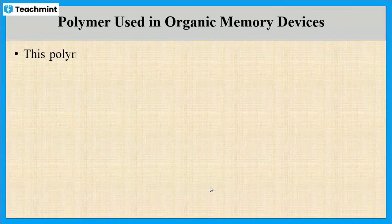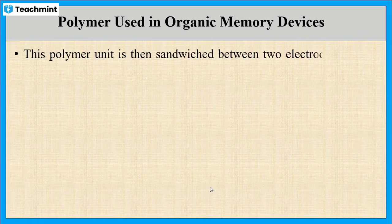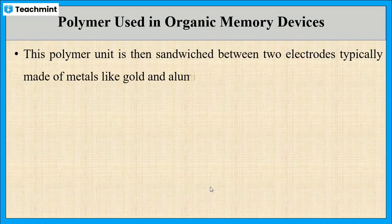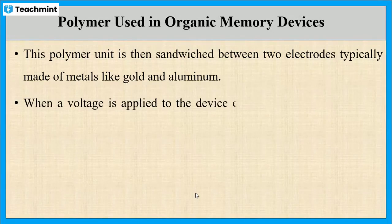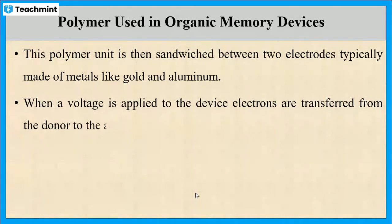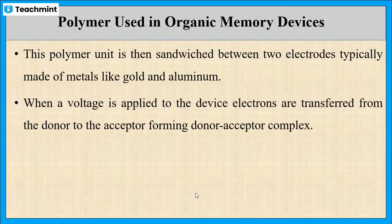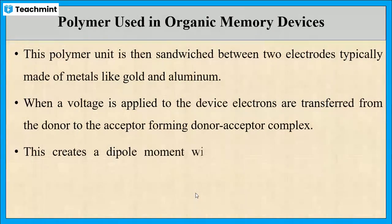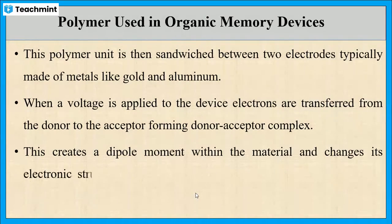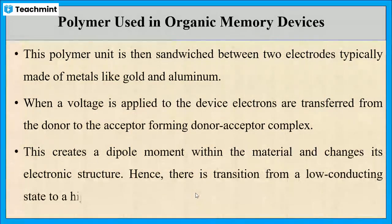This polymer unit is then sandwiched between two electrodes, anode and cathode. When voltage is applied across the electrodes, there will be flow of electrons from the donor to the acceptor of the polymer unit, forming a donor-acceptor complex. This creates a dipole moment within the material and changes its electronic structure.